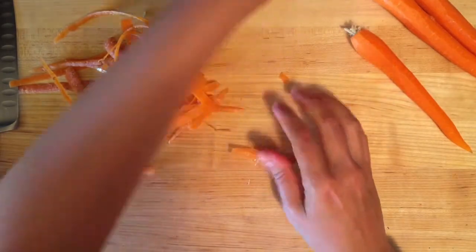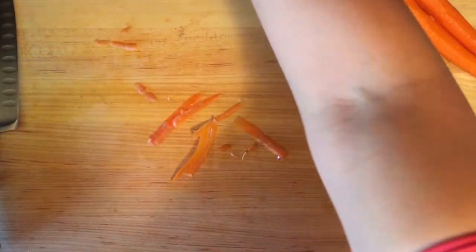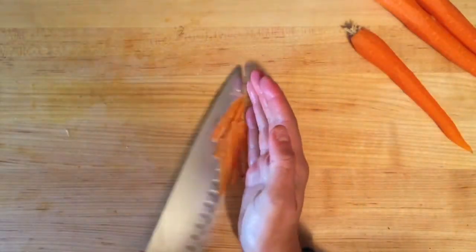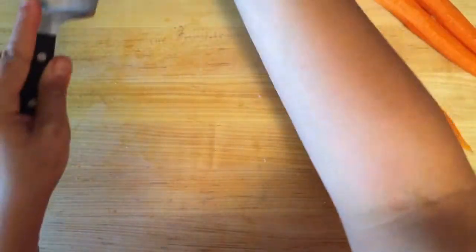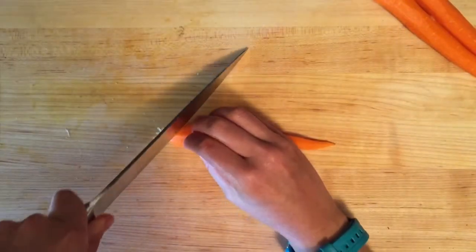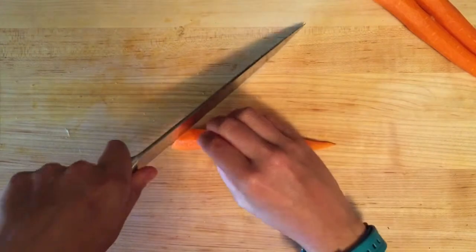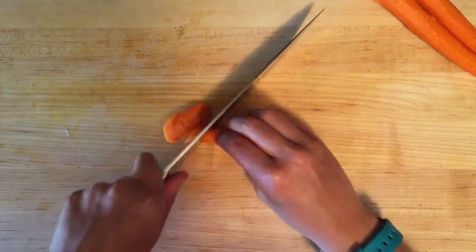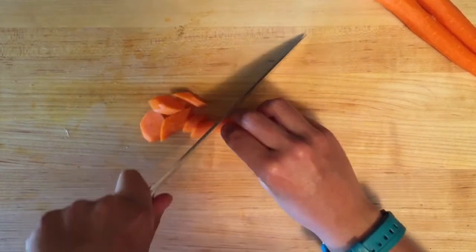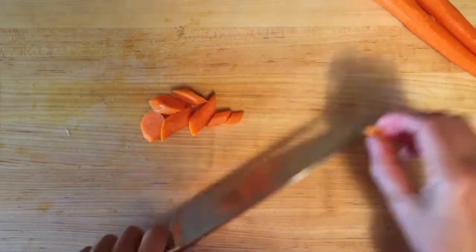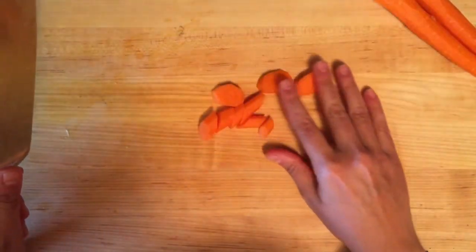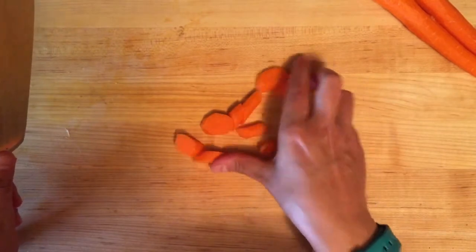So once you have your carrots peeled and you've gotten rid of all that garbage into your garbage bowl, there's many things we can do with it. We can cut on a bias. I really like doing this a lot for roasting or for salads and always remember to discard the top and the bottom of the carrot as well.